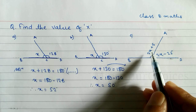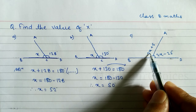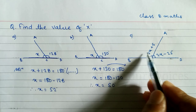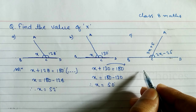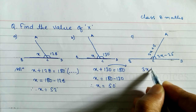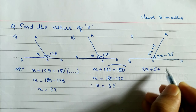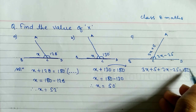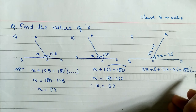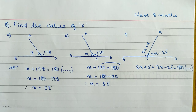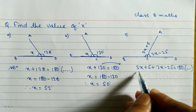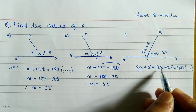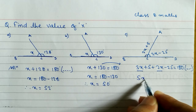In question number c, the two angles are 3x plus 5 and 2x minus 25. When you add these two angles we get 180 degrees. So we write 3x plus 5 plus 2x minus 25 is equal to 180 degrees, with the reason being supplementary angle. Now we add like terms: 3x and 2x gives 5x.